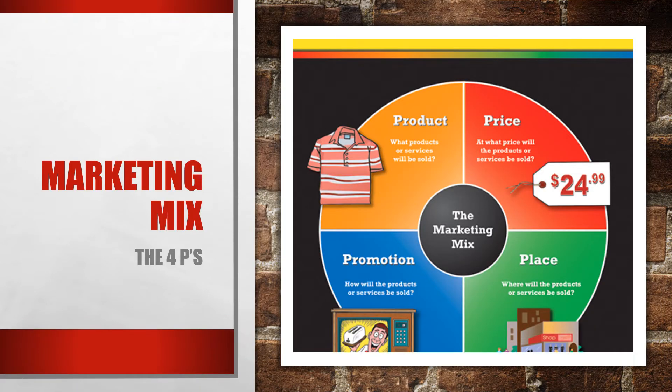Marketing mix — the four P's: Product — what product or service will be sold; Price — at what price will the product or service be sold; Place — where will the product or service be sold; Promotion — how will the product or service be promoted and sold.